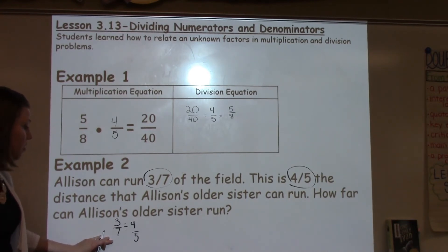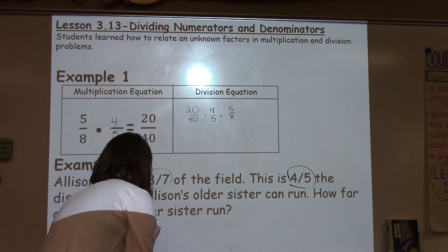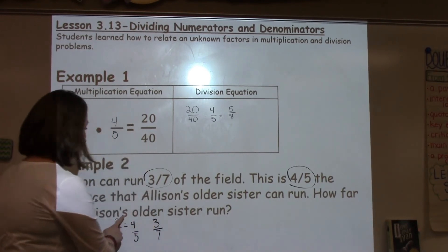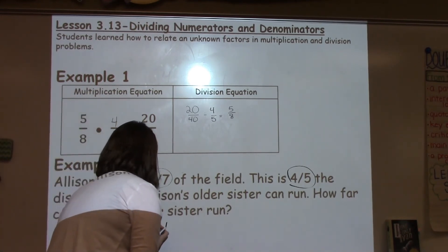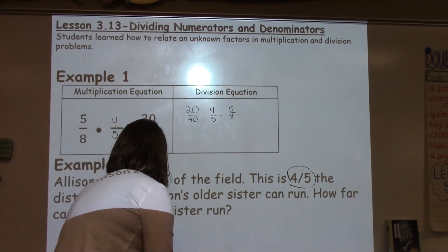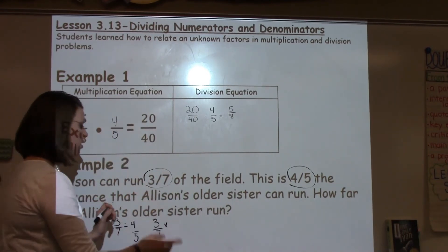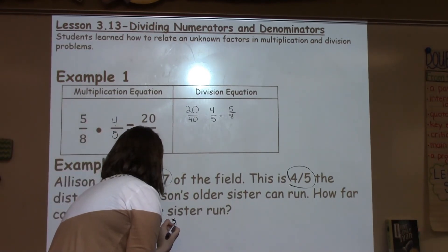We're going to keep our 3/7. I'm going to rewrite it over here. 3/7. We're going to change our division to multiplication. And then, I'm going to flip 4/5 into the reciprocal, which is 5/4.